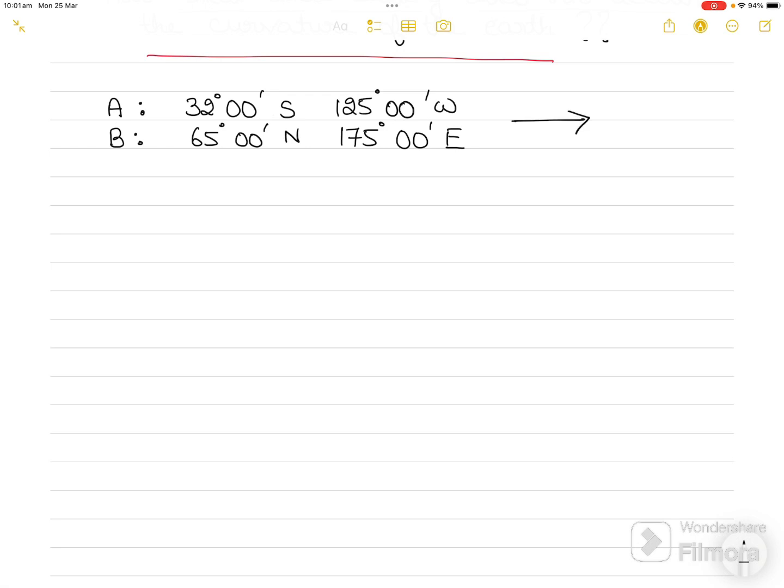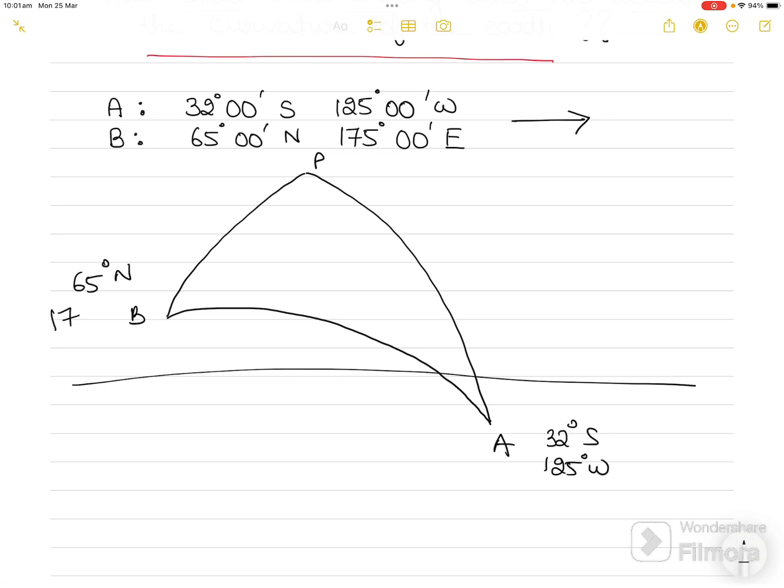The second question students often ask me is about drawing diagrams. Let's say a vessel is sailing from point A to point B, and I draw the diagram like this. I draw B here and A here. This is the north pole, this is B, and A is in the south hemisphere. Point A is 32 degrees south 125 degrees west, and B is 65 degrees north 175 degrees east.